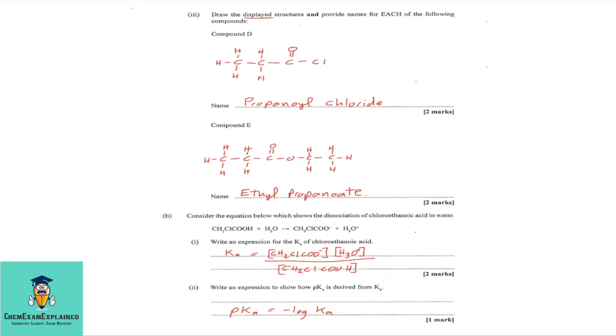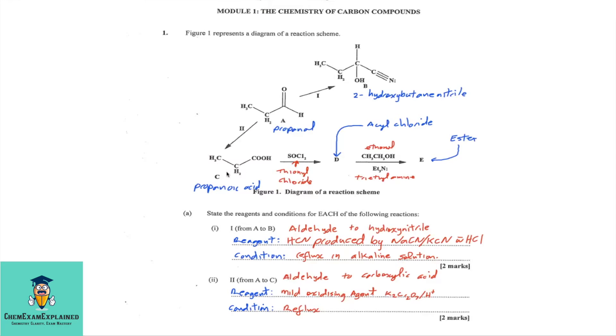Part 3, draw the displayed structures and provide names for each of the following compounds. Compound D. Now, if you look at compound C, you have a carboxylic acid. Now, you have thionyl chloride reacting with it. So, this is an acylating agent. So, you're going to form an acyl chloride. So, this is where the carboxylic acid group, specifically the OH group, will be replaced by a Cl group.